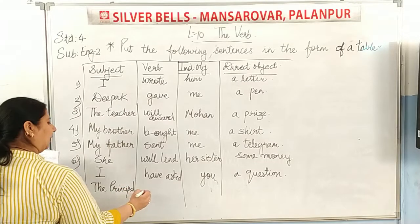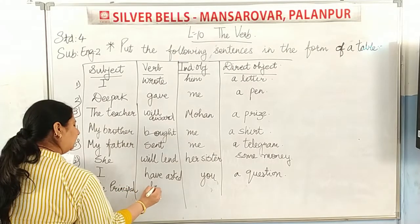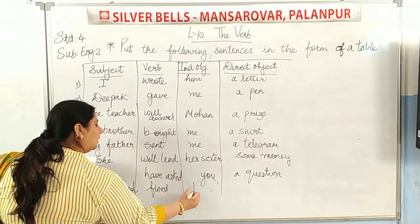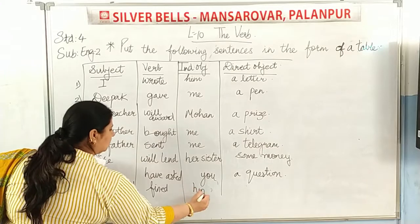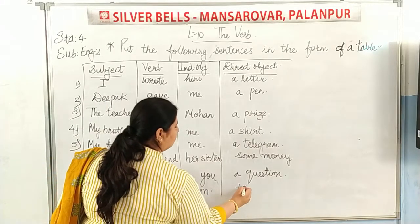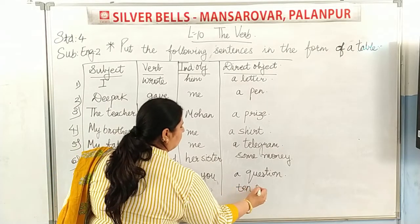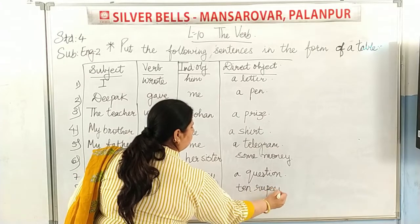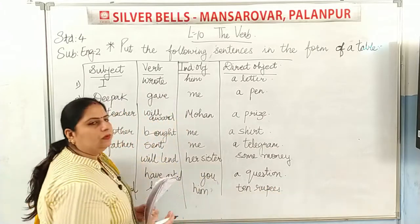Find is the verb, him is the indirect object, and ten rupees is the direct object.